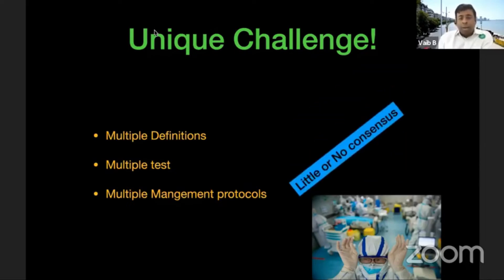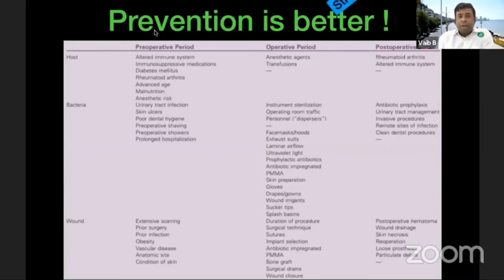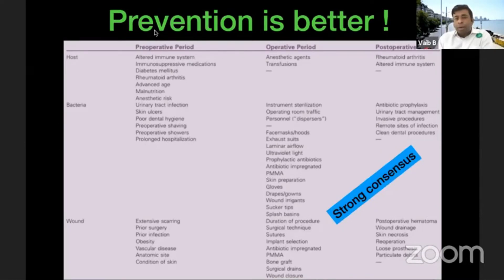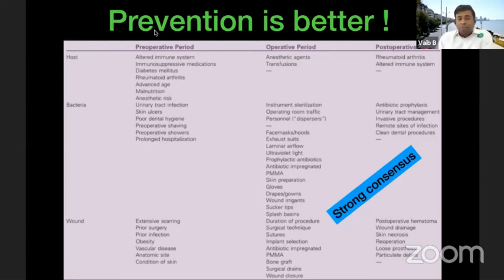There is little or no consensus on many things, but there is definitely consensus that prevention is better than treating infection. It begins in the pre-operative period — there are things we need to do during the operative time and in the post-operative period. We know there are patient factors and wound-related issues. There are ways we can prevent infection, and that is perhaps the most important part of this talk. In each of these aspects, there is room for improvement.